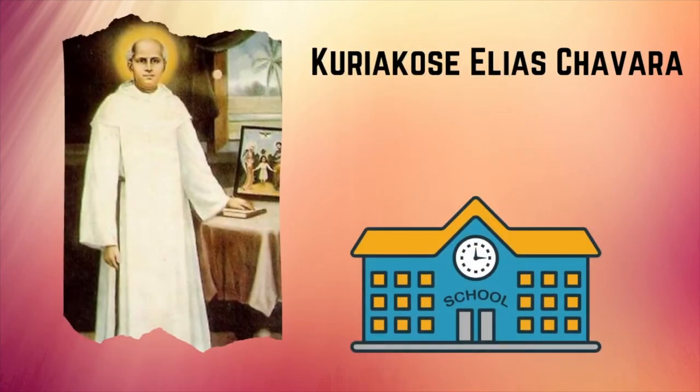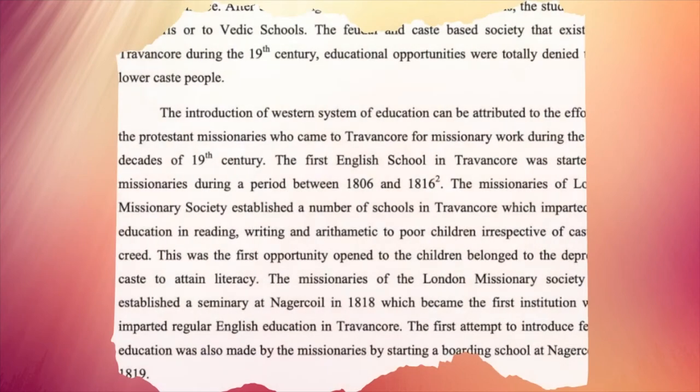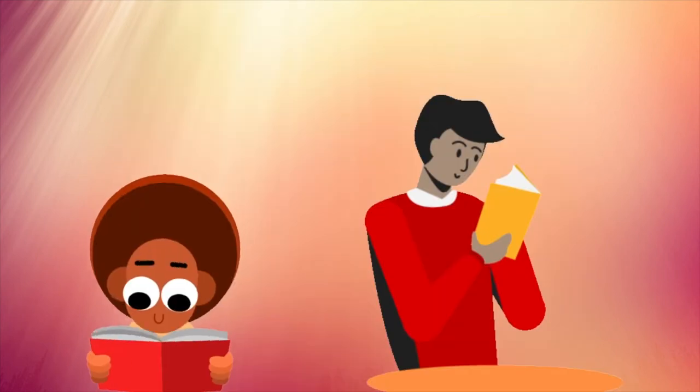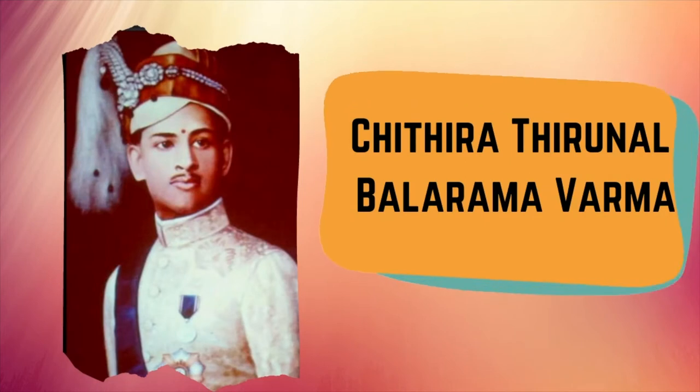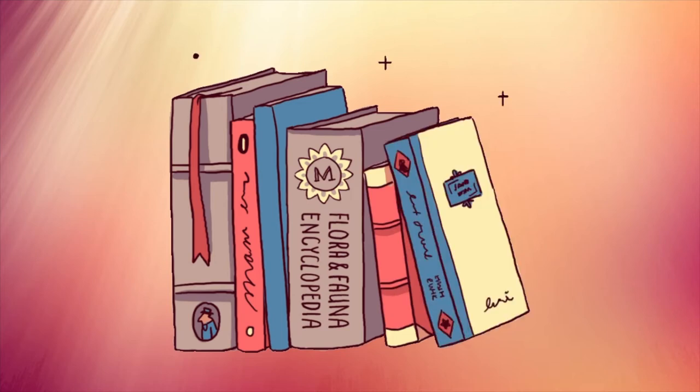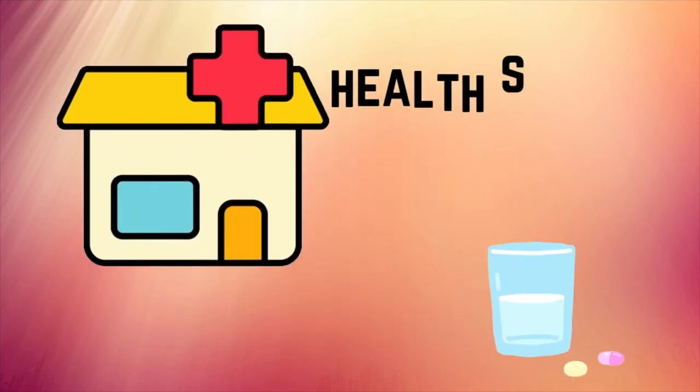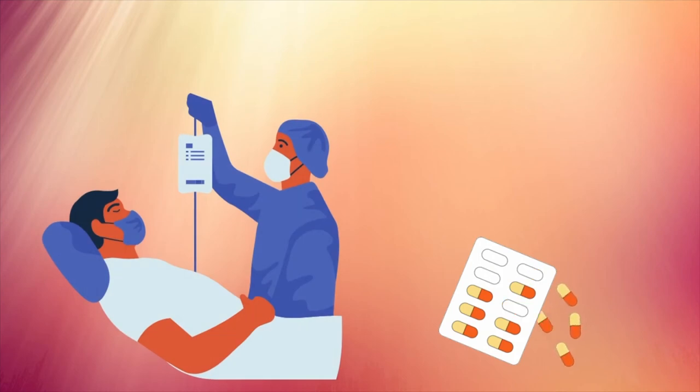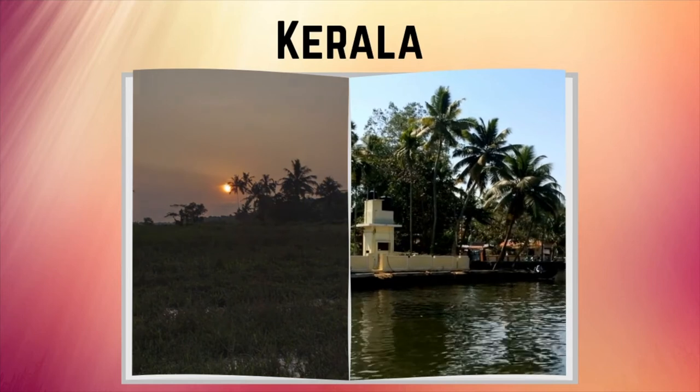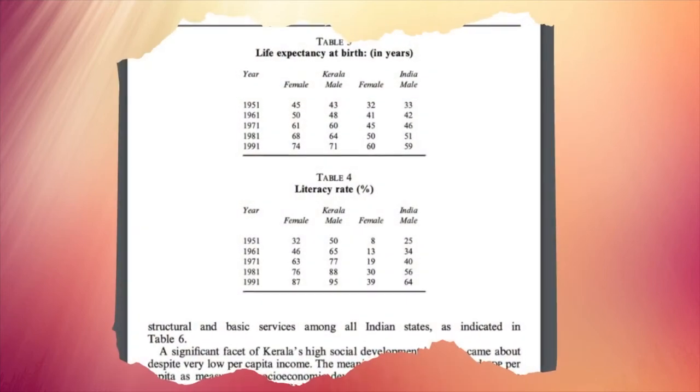Many Christian missionaries started schools, thereby made education available to all irrespective of caste or religion. The princely rulers of Travancore and Kochi passed many rules which promoted education accessible to many people. They also focused on the health sector and tried to make western medicines available to the common people. All these factors made Kerala the highest literate state with good health sector even before independence.